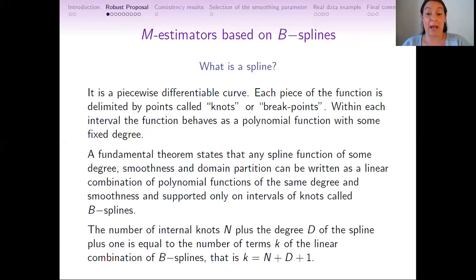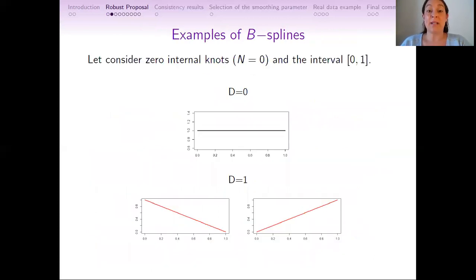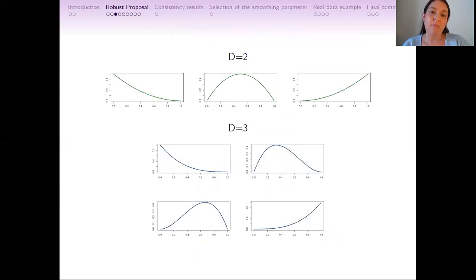The number of internal knots n plus the degree of B-spline plus 1 is equal to the number of terms k of the linear combination of B-splines. Let's see some examples of B-splines. Consider the interval [0,1] and 0 internal knots, that is, n equals 0. Then the number of elements on the B-spline basis is D plus 1. So when D equals 0, we have just one B-spline function. But when D equals 1, we have two B-spline functions, and so on.